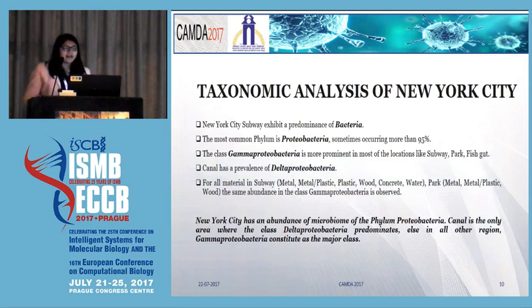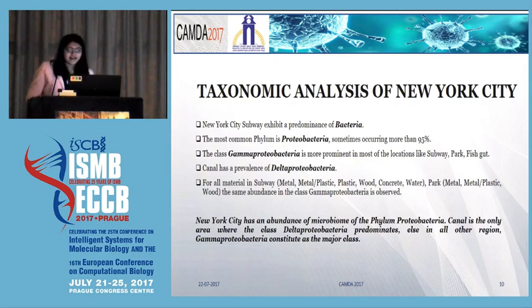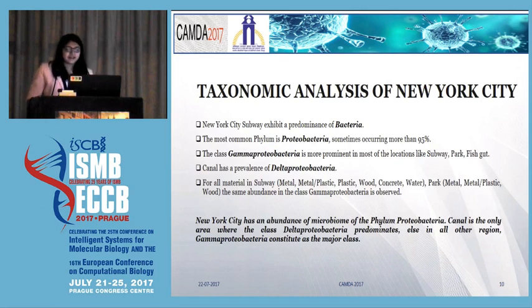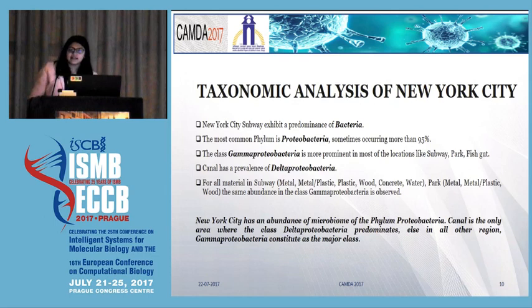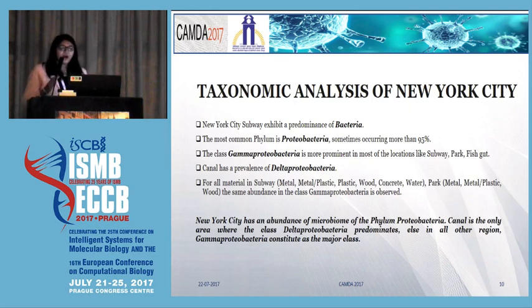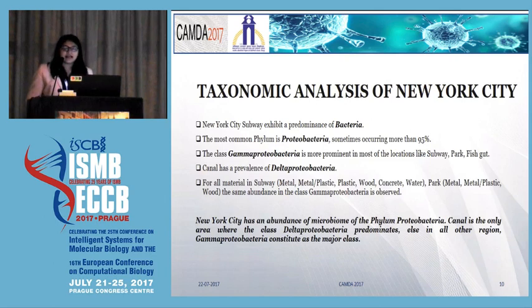Coming to the taxonomic analysis of New York City, we have found a very interesting phenomenon. There is a predominance of bacteria here. Many samples show complete absence of other domains like eukaryota, virus, etc. Interested in this phenomenon, we went to study other materials like plastic, concrete, and animal in the form of fish gut, and our observation was similar. A deeper analysis proved that most of the bacteria were from the domain Proteobacteria. Some samples had more than 95% microbes coming from phylum Proteobacteria. Other than canal, all other areas were enriched in gamma Proteobacteria. Only the canal showed an abundance in delta Proteobacteria.